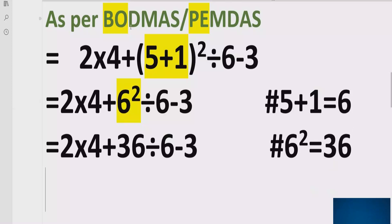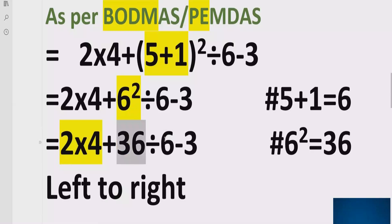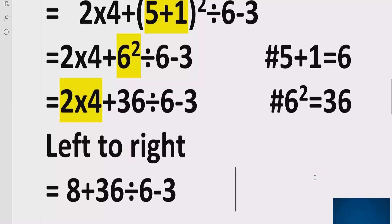Now move forward. Step number three is division and multiplication. We go left to right to find which operation comes first. We have 2 multiplied by 4 — we solve this first and get 8. So the expression becomes: 8 plus 36 divided by 6, minus 3. Reference: 2 multiplied by 4 equals 8.